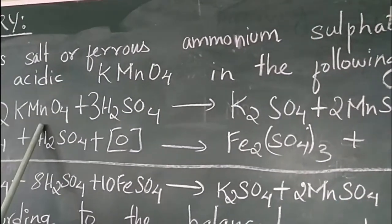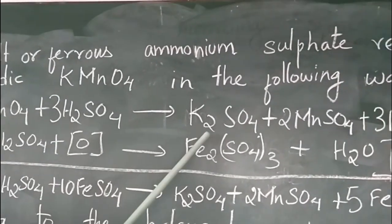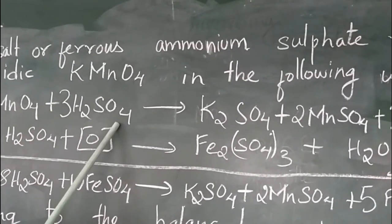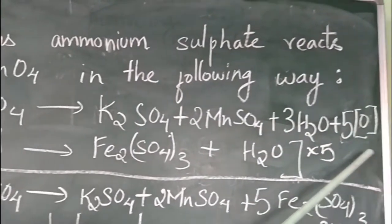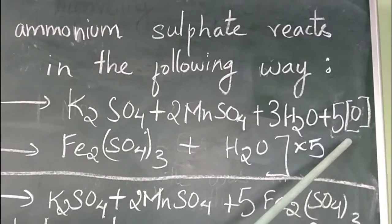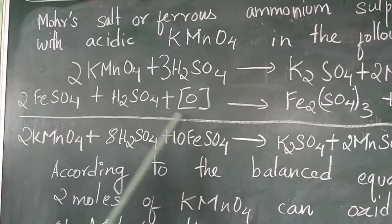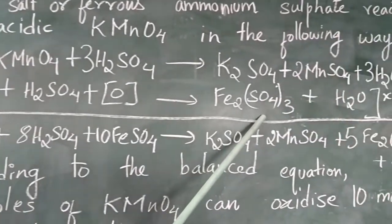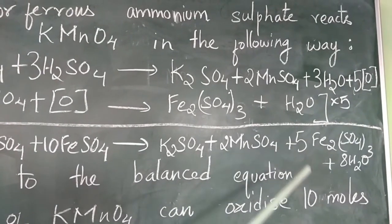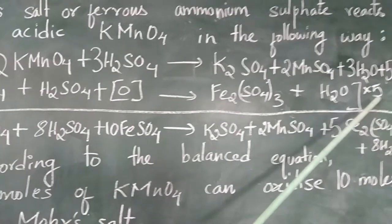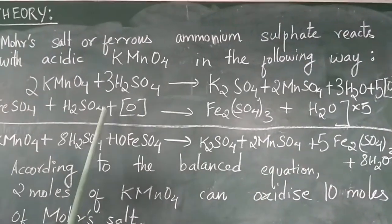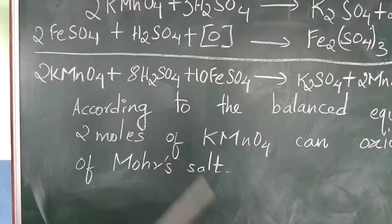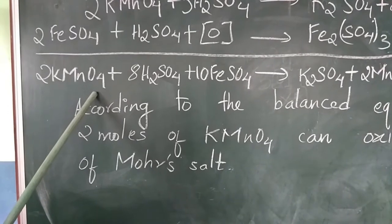KMnO4 reacts with H2SO4 to give K2SO4, MnSO4, water, and nascent oxygen. This nascent oxygen will oxidize ammonium iron sulfate to give ferric sulfate and water. Multiplying the whole equation by 5 to equalize the number of nascent oxygen gives us the overall equation for the reaction.